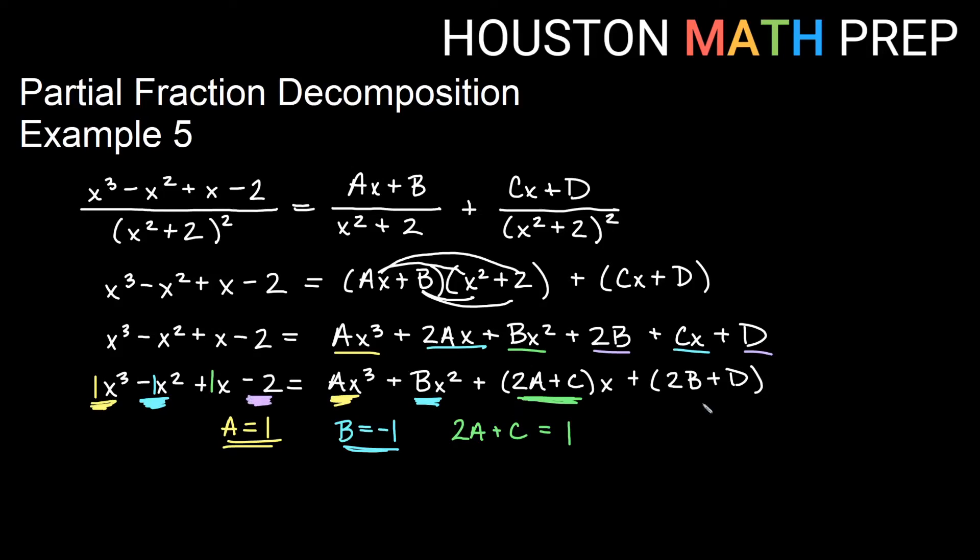And the last one, I have negative 2 here. And that's equal to 2b plus d. So 2b plus d is equal to negative 2. And we've already got two of these solved. And that's going to help us get these other ones here.